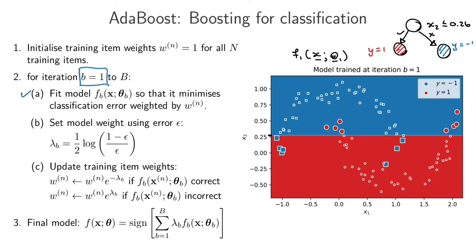Step B says: set the model weight using the error term epsilon. Intuitively, lambda_b will be a large weight if the classifier does well — that is, if it has a small error — and it will be small if the classifier is not doing well. In this case the classifier is messing up on some points but overall correctly classifying most of the training data. The lambda assigned here, lambda_1, is equal to 0.87, which is a reasonable number.